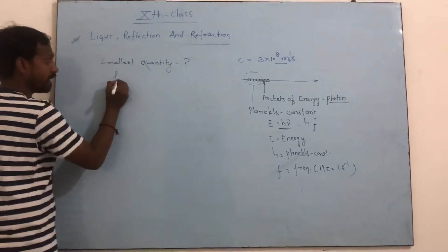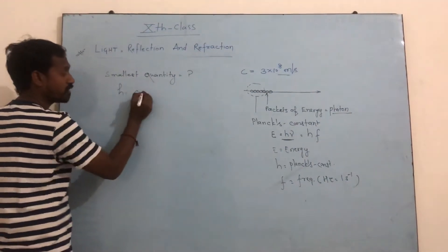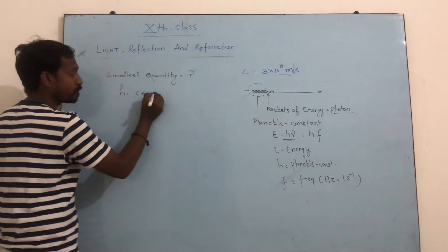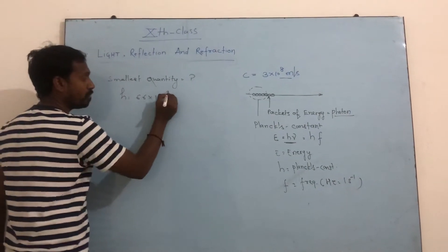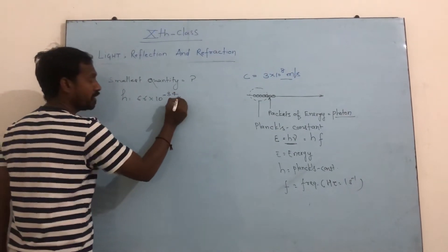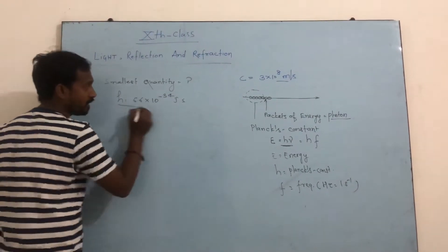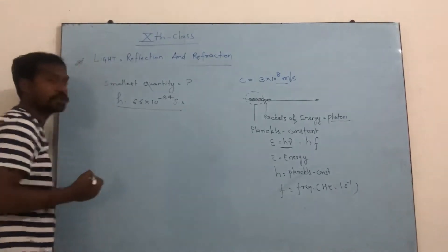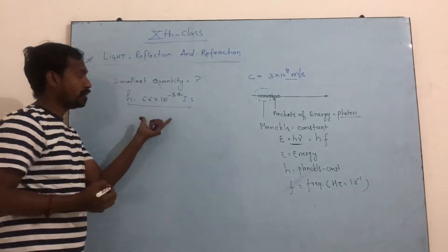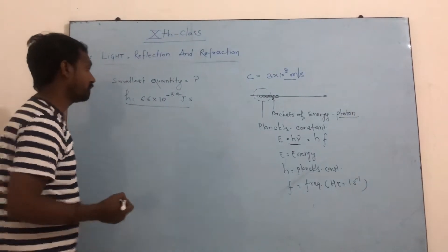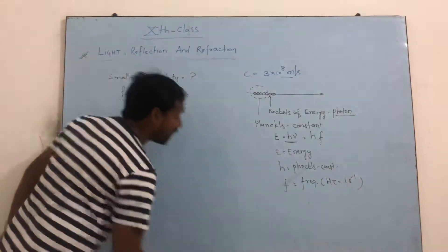Planck's constant is denoted as h. H means Planck's constant: 6.6 times 10 to the power minus 34 joule-second. It is the smallest quantity of nature.